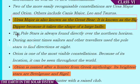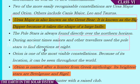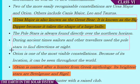The position of the Pole Star remains the same throughout the night and never changes. During ancient days, sailors and travelers used the Pole Star to find directions at night.